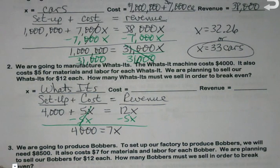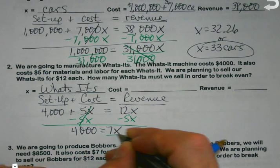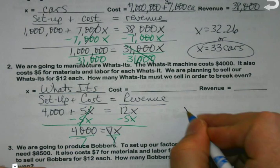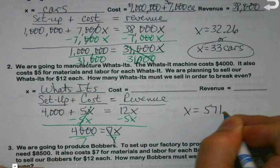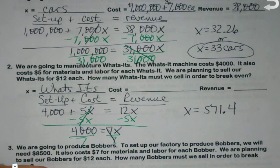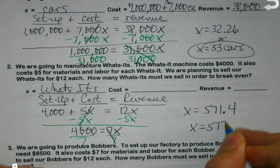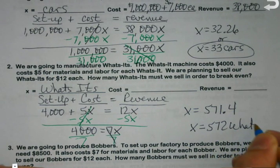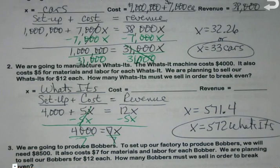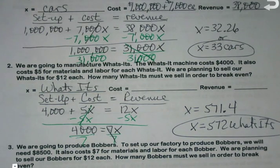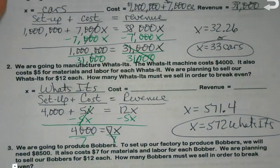You'll start to see the setup works the same. So those of you that are creatures of habit, this is great — because you just get to keep doing the same thing each time. How much are we making for every what's-its? $12. And what's that last step always going to be? Divide. Because when I punch it in, I get a decimal again. So we round up and we need 572.